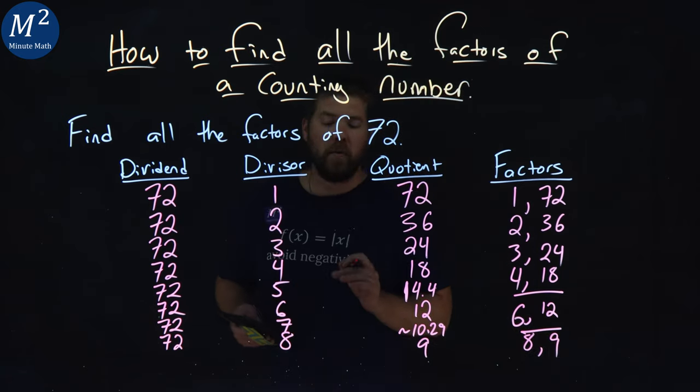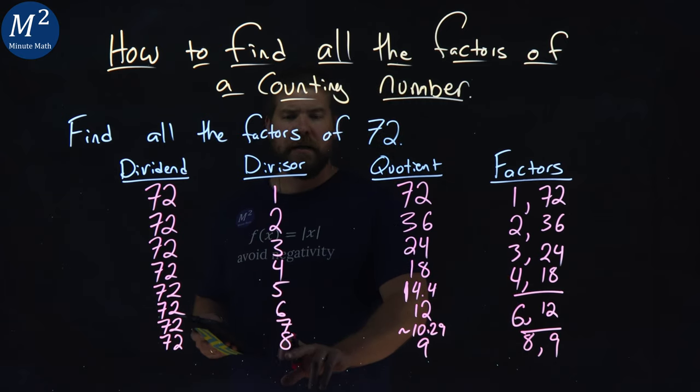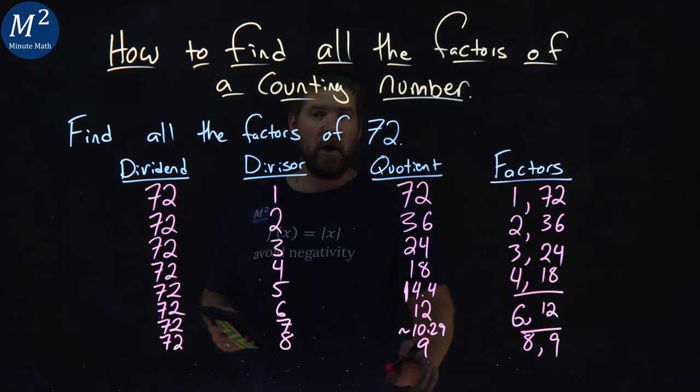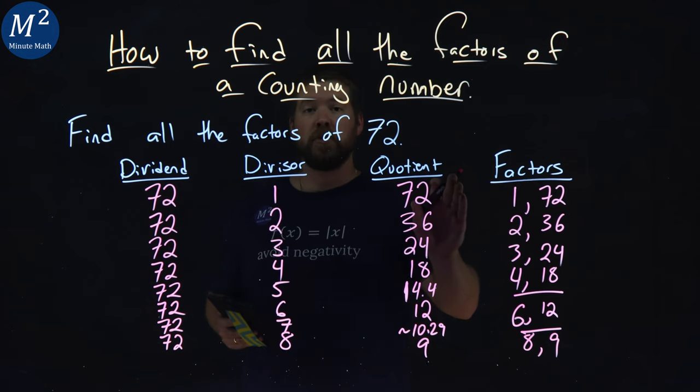The reason why we're stopping here is because what happens is the next one? 9. The divisor becomes 9, its quotient will be 8. Once the divisor becomes larger than the quotient, we're done checking.